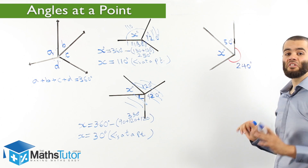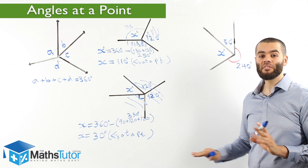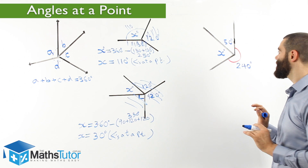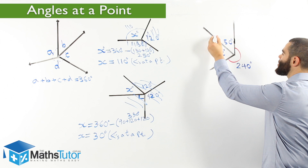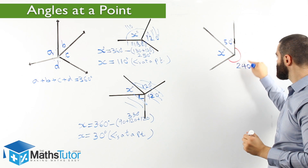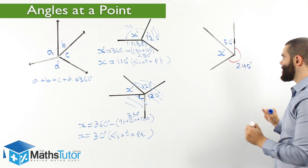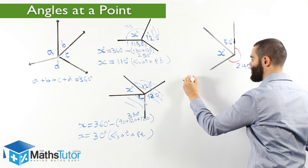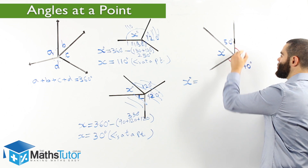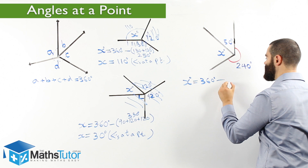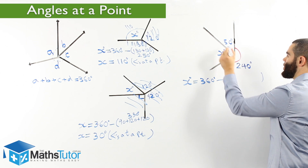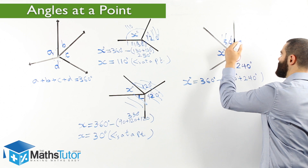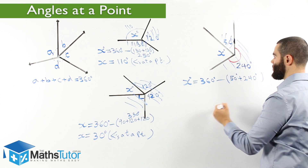Move on to the last one. We're going to do the same setup — nothing different. If we follow the same setup, we'll never make a mistake. Again, we notice we have three angles here: an angle marked with an X, an angle marked with 50, and an angle marked with 240 degrees. This is, as you can see, a reflex angle — a very large angle. We're going to take away the reflex angle and take away the 50 to be left with X. We know the total is 360 degrees. Take away the angles that we don't need, which are the 50 and the 240 degrees. We're going to be left with X.